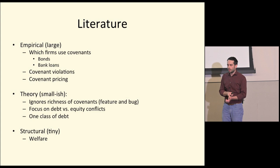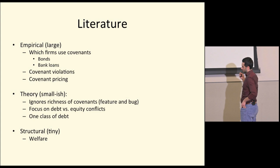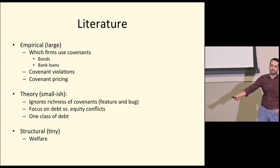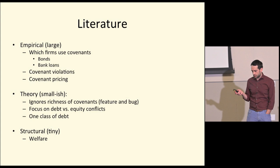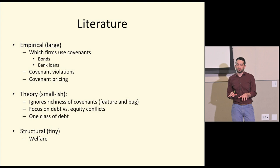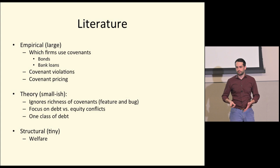The literature has been very lazy about distinguishing bond covenants and bank covenants — and that will actually matter quite a lot. We know which firms violate their covenants, how frequently, and what happens after violations. There's a theory literature that's comparably smaller. It's primarily focused on how covenants resolve the conflict of interest between equity and debt, mostly with one class of debt — which makes discussing secured versus unsecured debt somewhat meaningless.